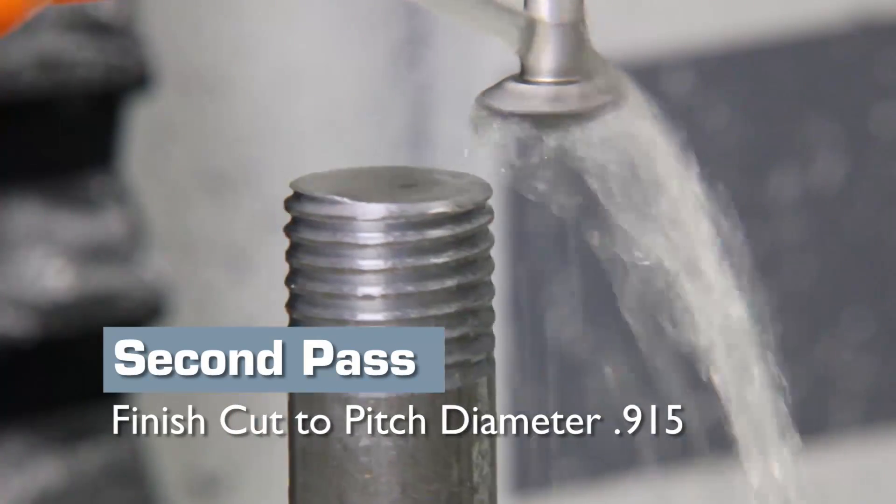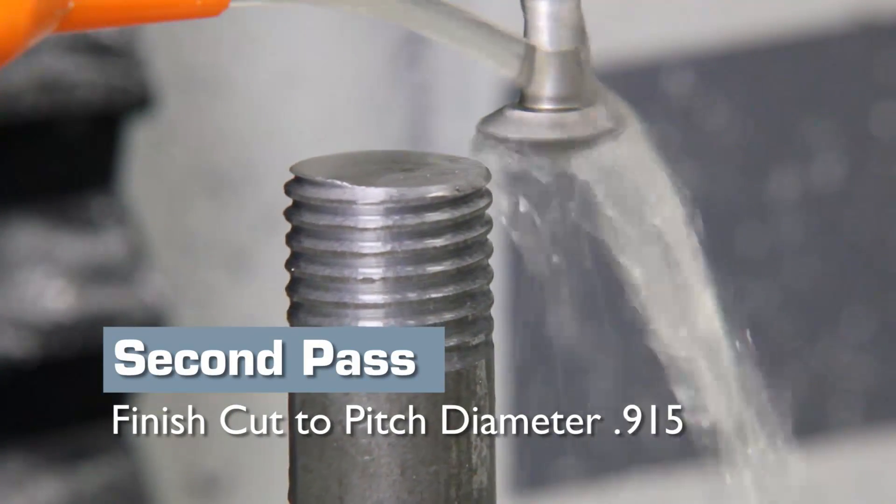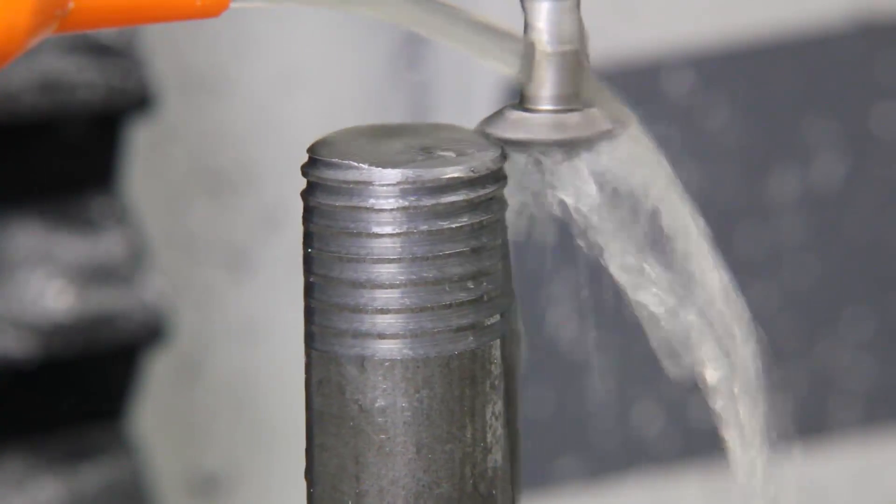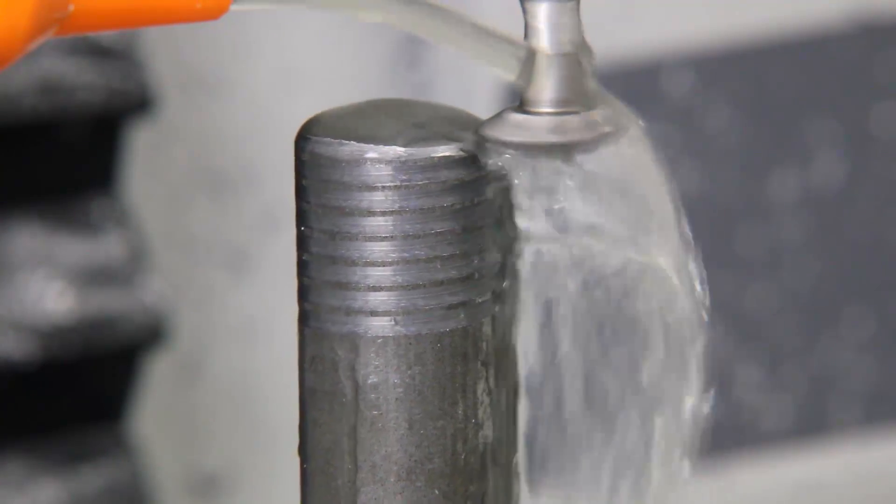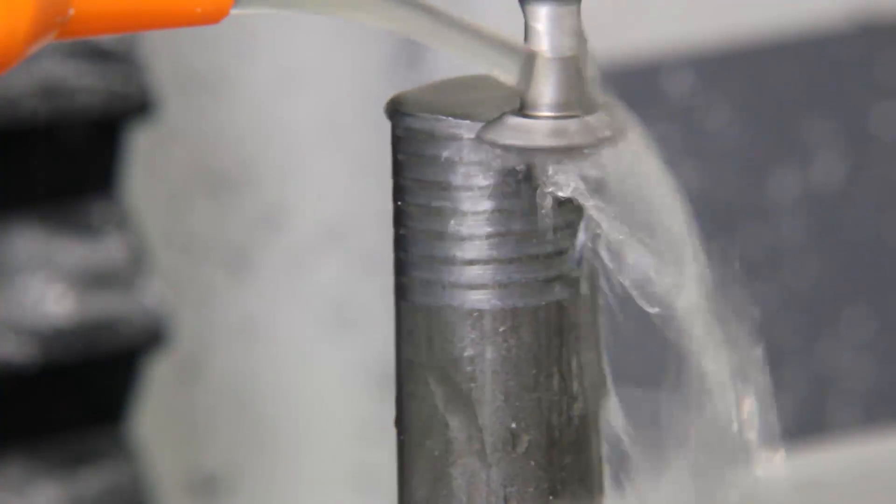For the second pass we're going to cut to the final pitch diameter of 915 thou. We're using a general-purpose water-based synthetic coolant to lubricate and cool the cut.